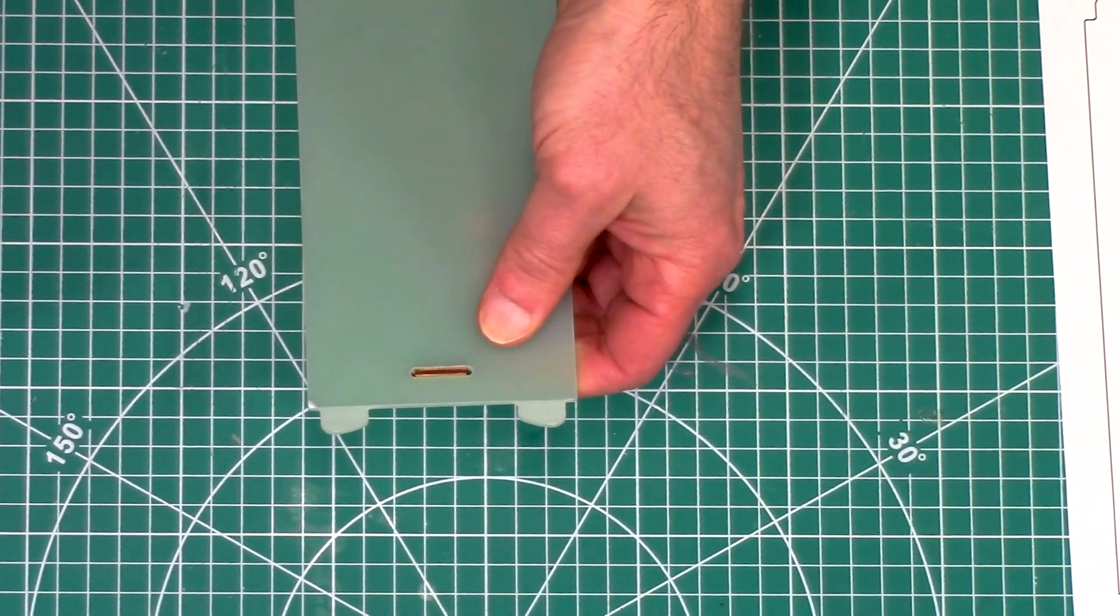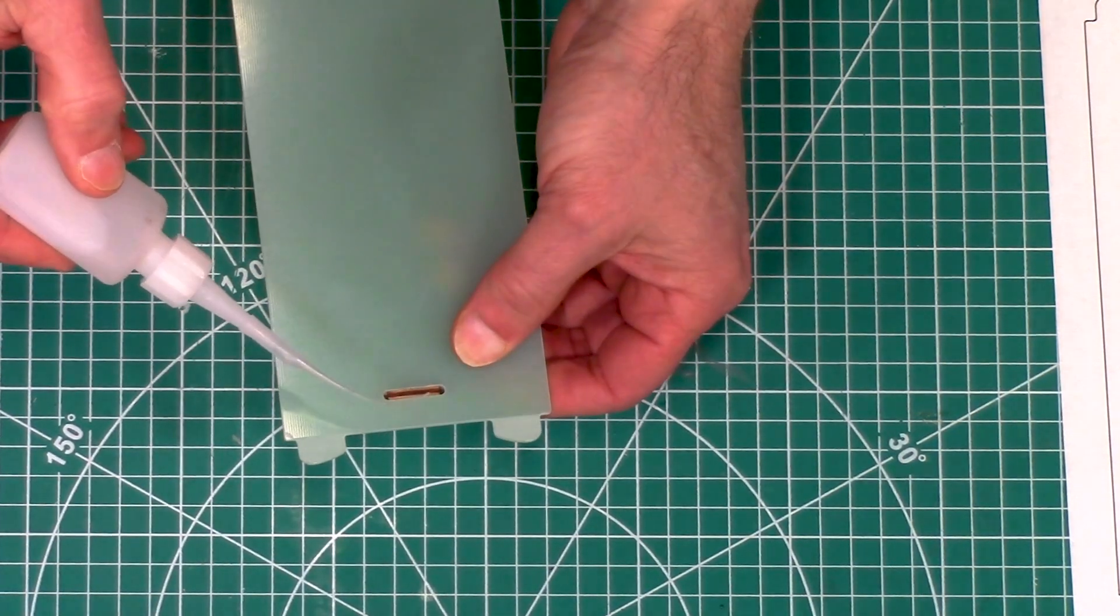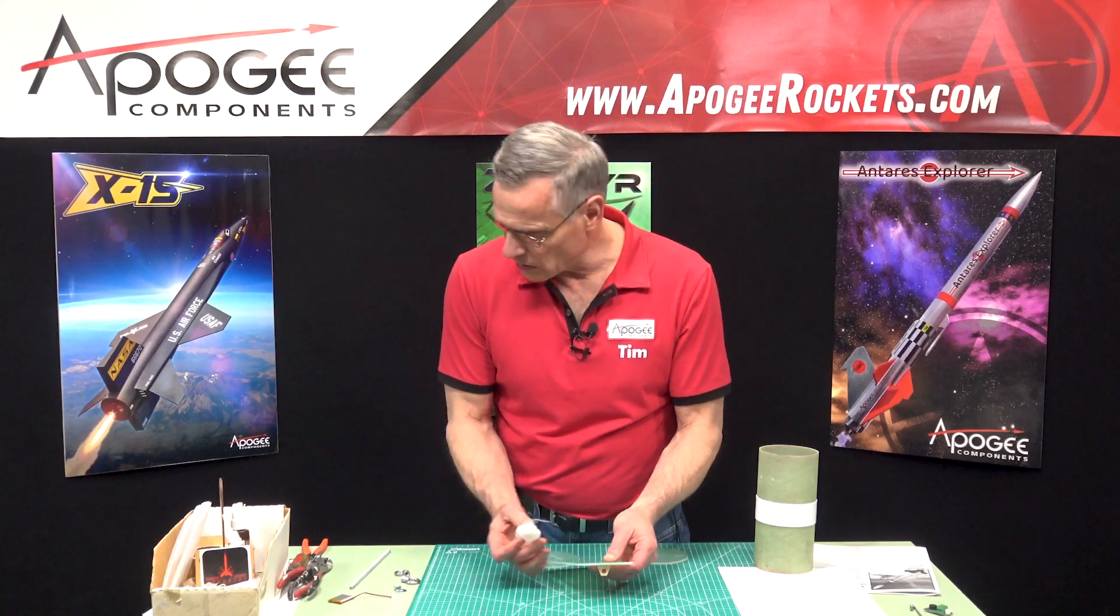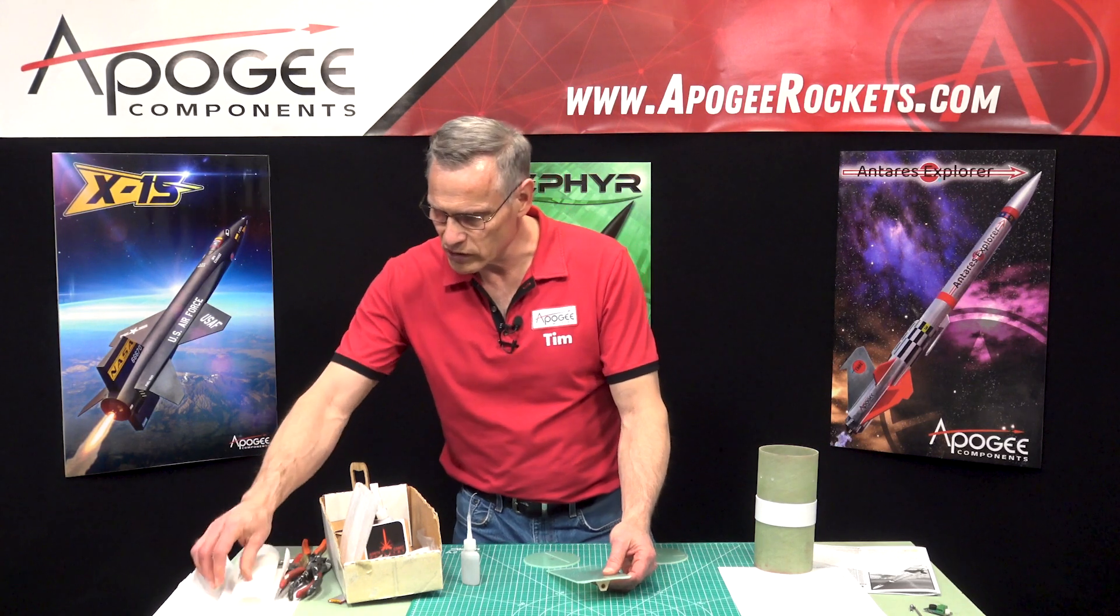Right there. I'm actually gonna use, since I've already got it in, thin super glue and just let it wick in. Some paper towels—I got too much on the surface.